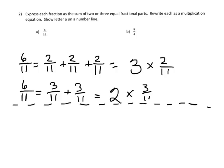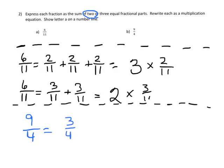For 9/4, we don't have much of a choice — you can't cut it up into two equal parts; we can only cut it into three equal parts. So that's going to be 3/4 plus 3/4 plus 3/4, which is equal to 3 times 3/4.